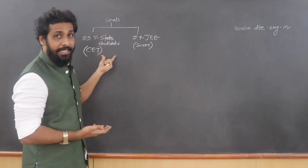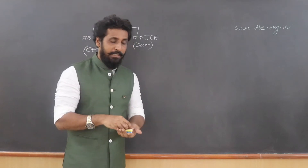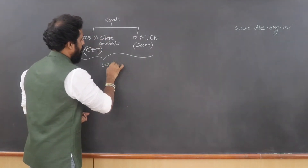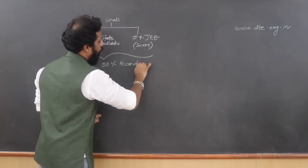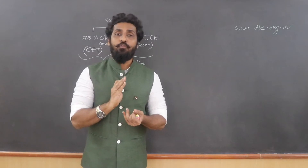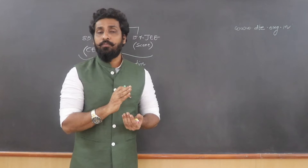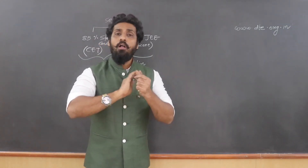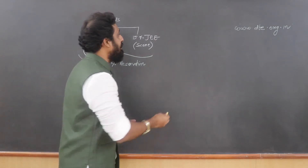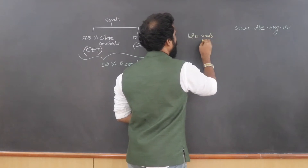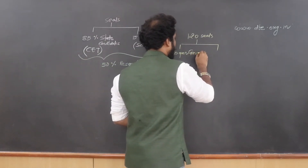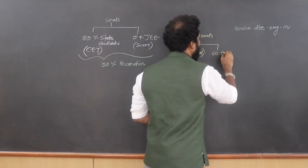The distribution of seats is 85% for CET and 15% for JEE. In both categories, there is 50% reservation. That 50% reservation includes reservation for women, OBC, NT1, NT2, NT3, and all other categories. For instance, if a college has 120 seats, it will be bifurcated into 60 general (open) category seats and 60 reserved category seats.